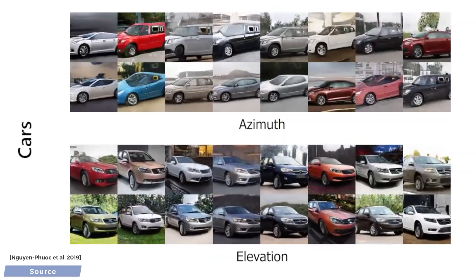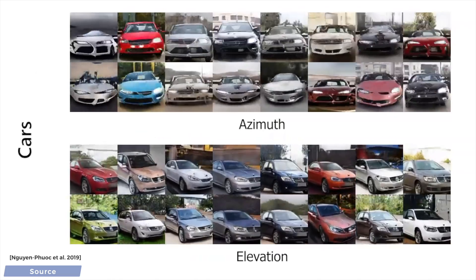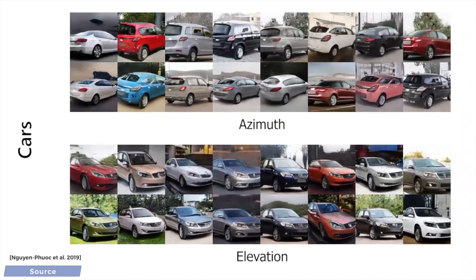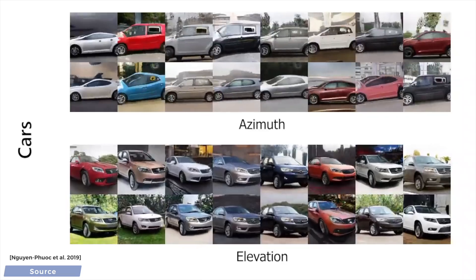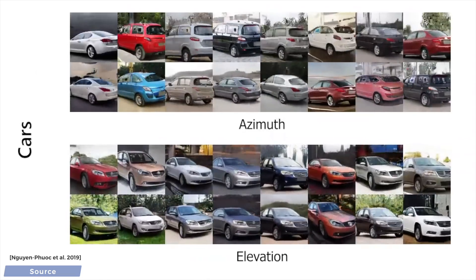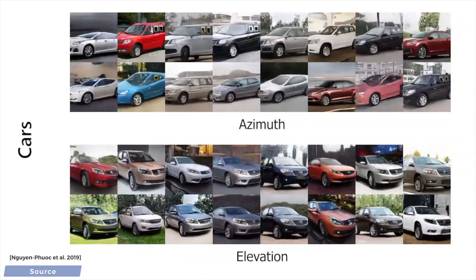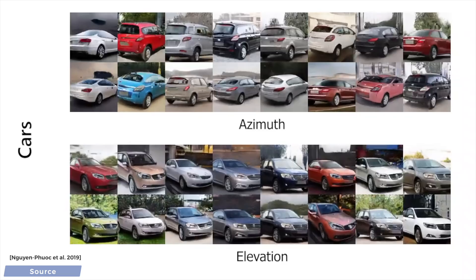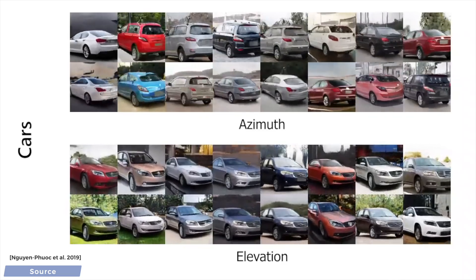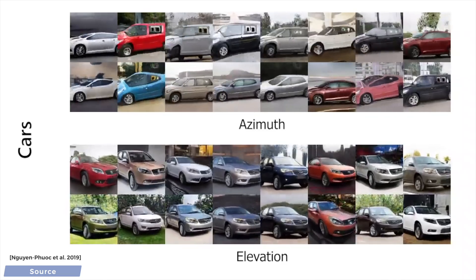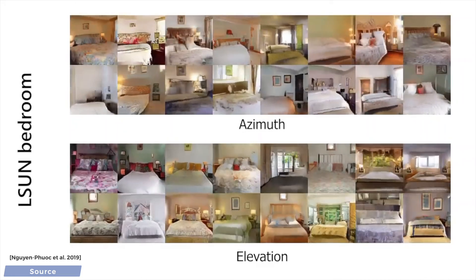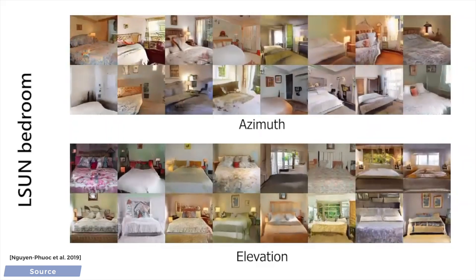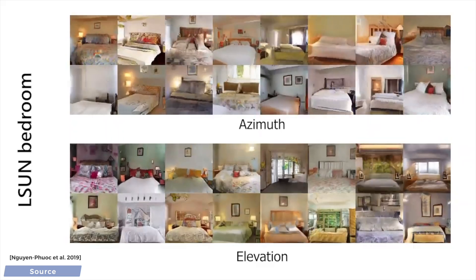Now, it is abundantly clear that as we rotate these cars or change the camera viewpoint for the bedroom, a flickering effect is still present. And this is how research works — we try to solve a new problem one step at a time, then we find flaws in the solution and improve upon that.